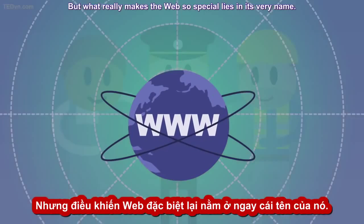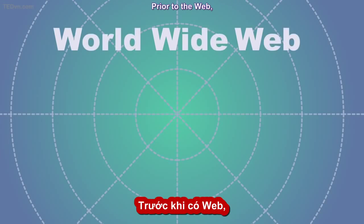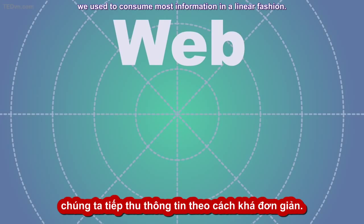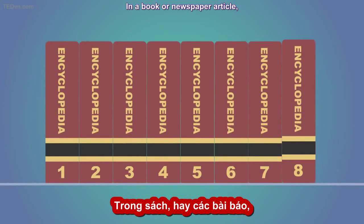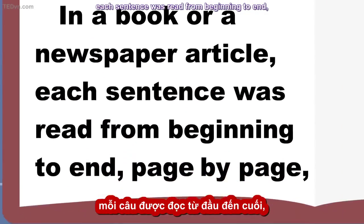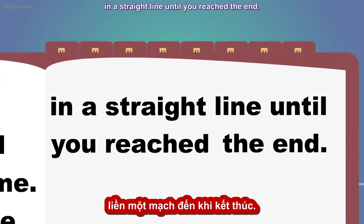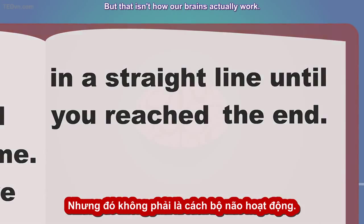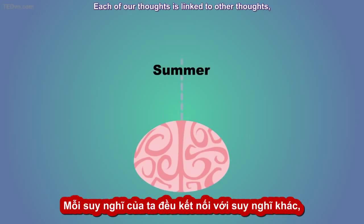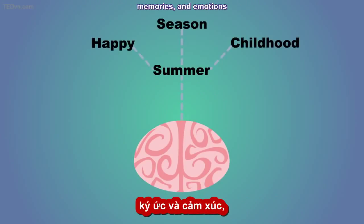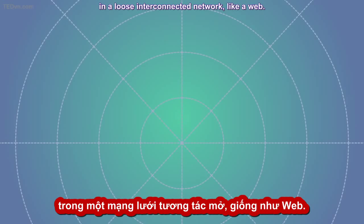But what really makes the web so special lies in its very name. Prior to the web, we used to consume most information in a linear fashion. In a book or newspaper article, each sentence was read from beginning to end, page by page, in a straight line until you reached the end. But that isn't how our brains actually work. Each of our thoughts is linked to other thoughts, memories, and emotions in a loose, interconnected network, like a web.